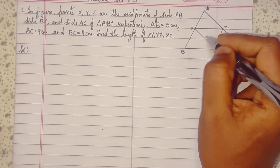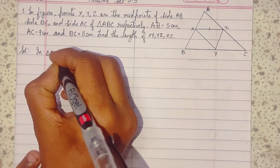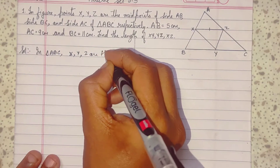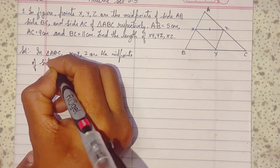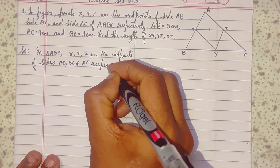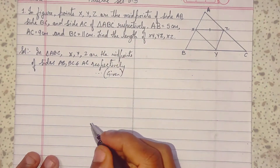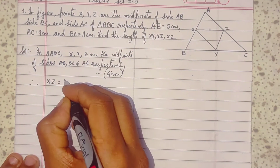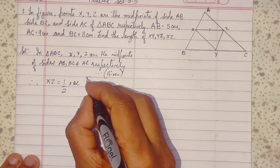We will get the answers quickly because midpoints and measures are both given. In triangle ABC, X, Y, Z are the midpoints of sides AB, BC, and AC respectively. This is given to us.